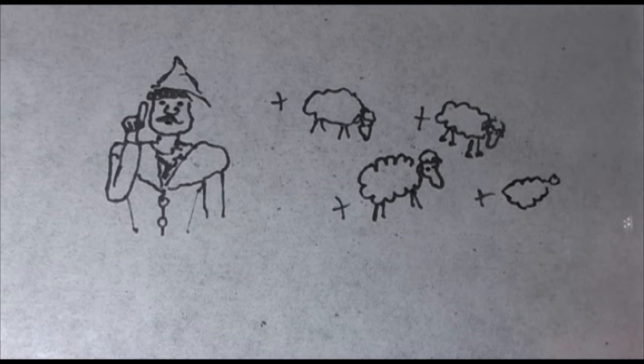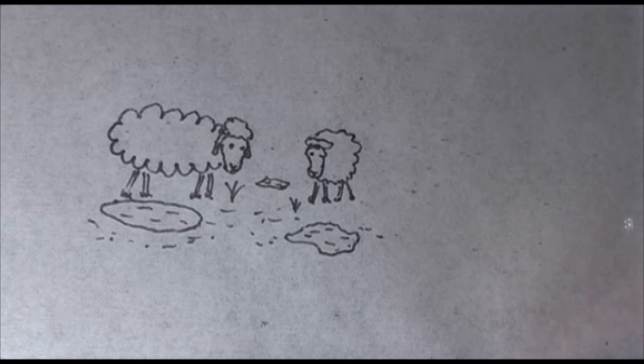Rational herdsman concludes that the best choice for him is to add another animal to his herd. And another, and another. Soon, there are 200 sheep and they eat the grass with roots, so the pasture can now feed only 20 sheep. The freedom in commons brings ruin to all.